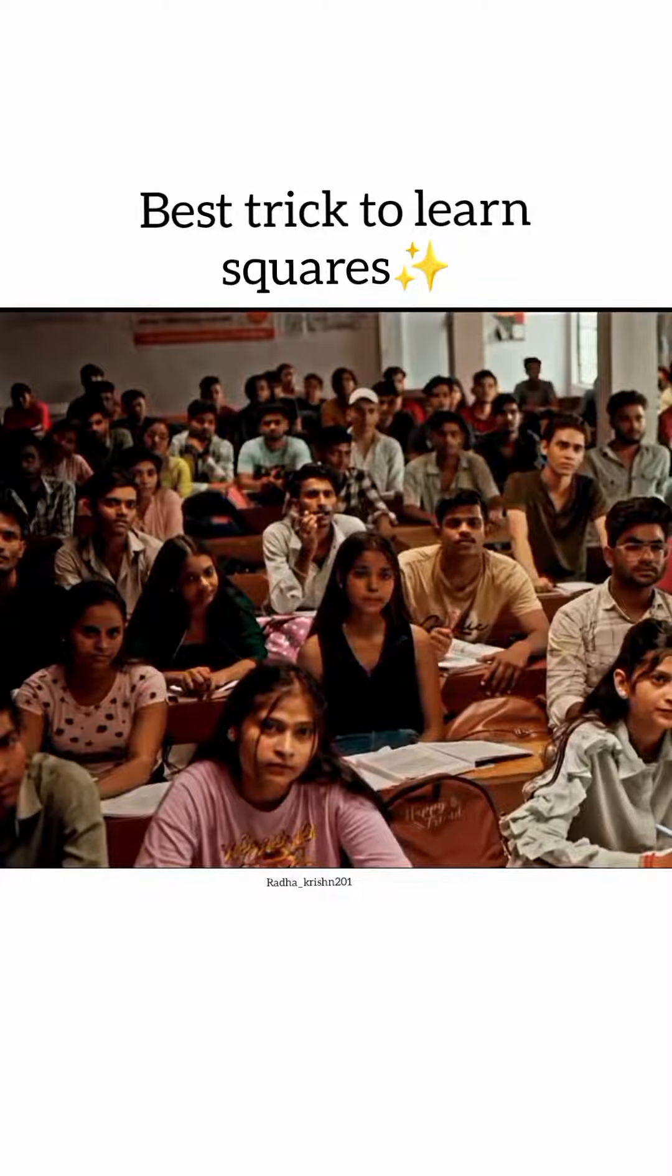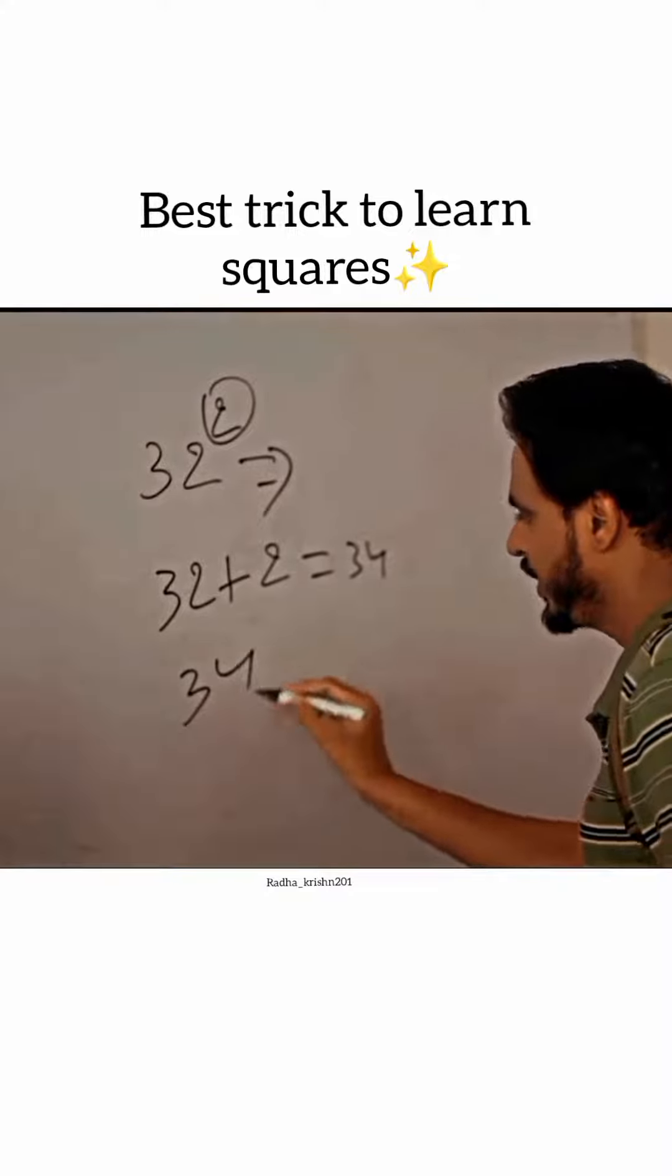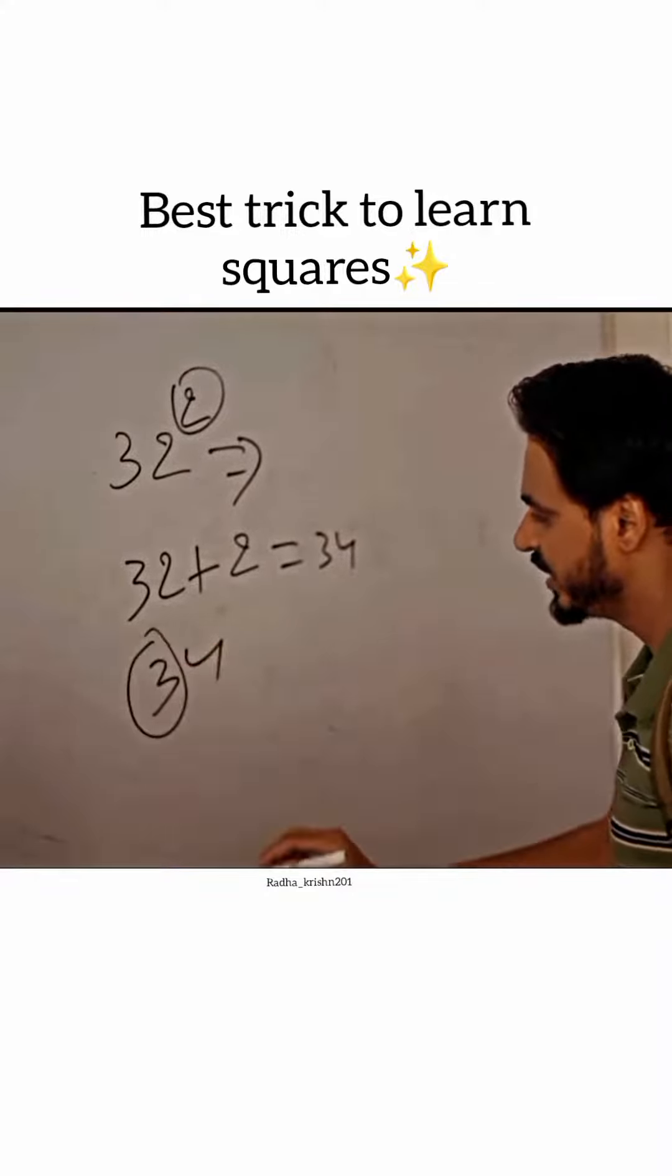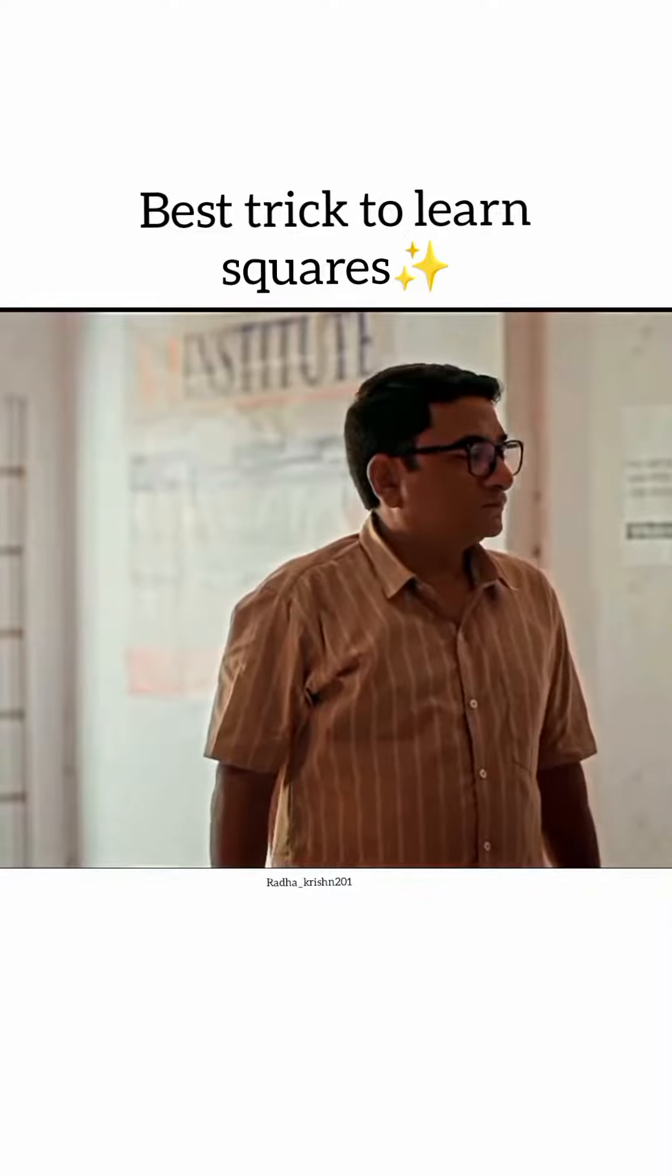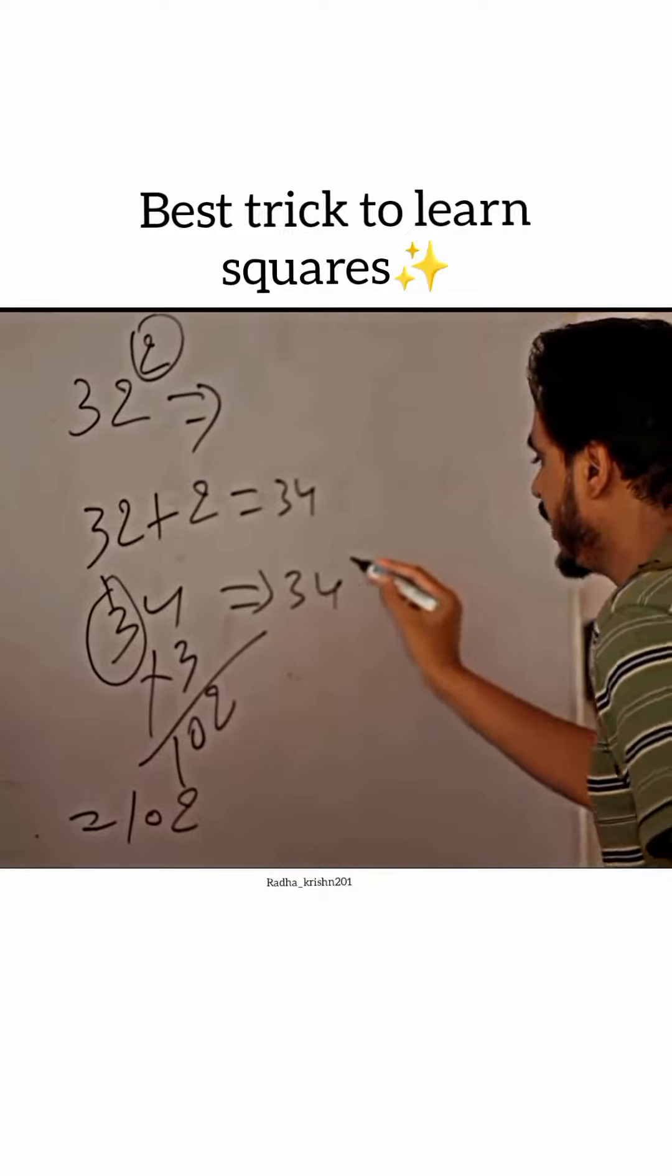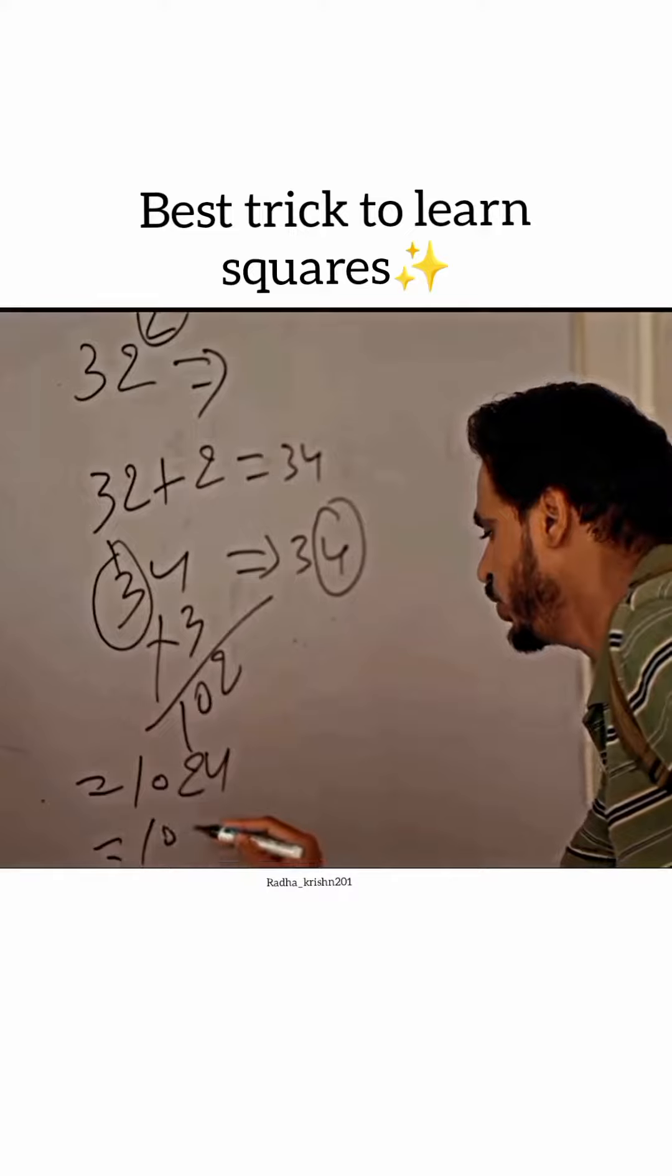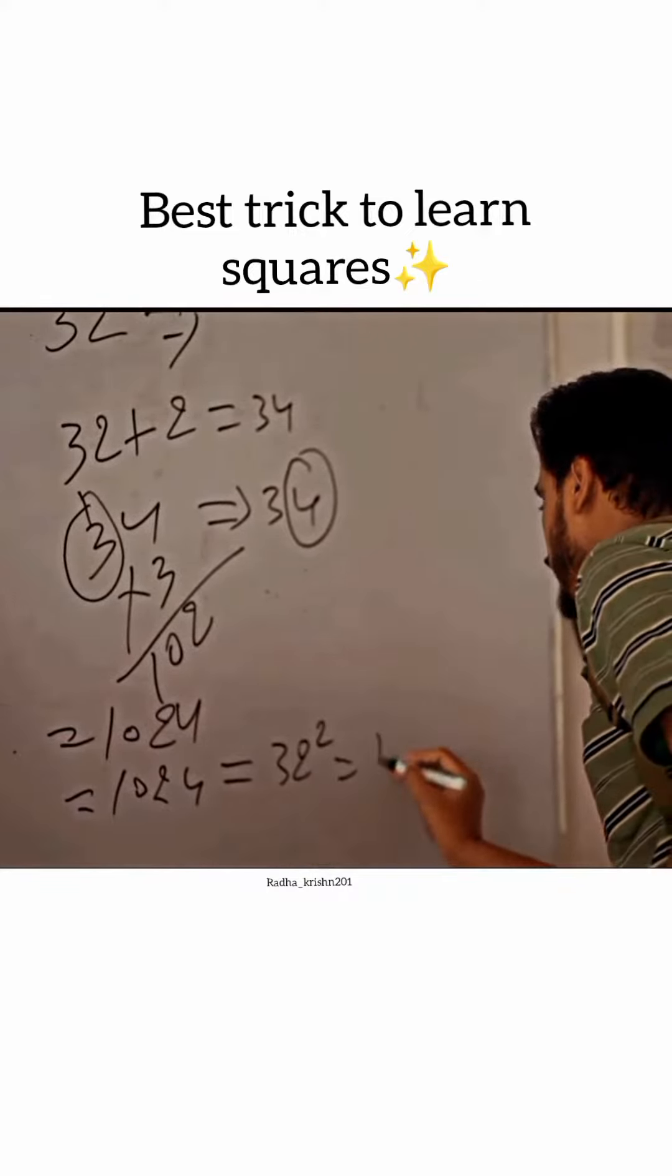This will be 34. Now, we will see what our first digit is. The digit is 3. Now, we multiply 3 by 4: 12, 1, 3, 9, 10... 1, 0, 2. The answer is 1024. So, 32 square will be 1024.